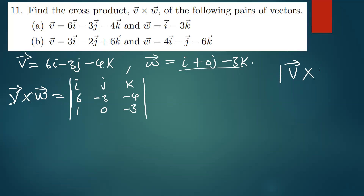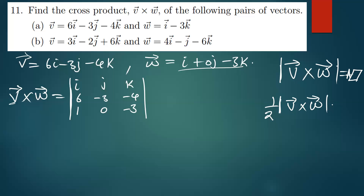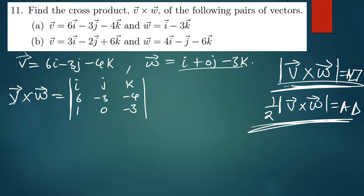The magnitude of v cross w gives you the area of a parallelogram, and half the magnitude gives you the area of a triangle. So if you've been asked to find the area of a parallelogram, you just find the magnitude of the vector found after crossing the two vectors. For a triangle, you find half of that magnitude.